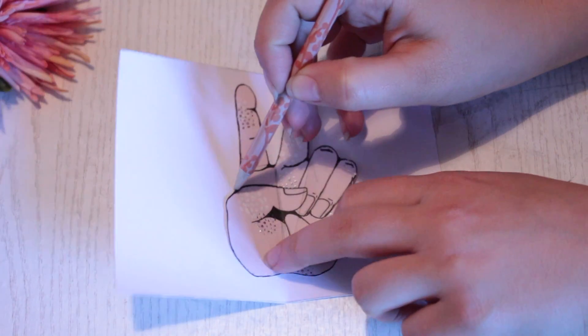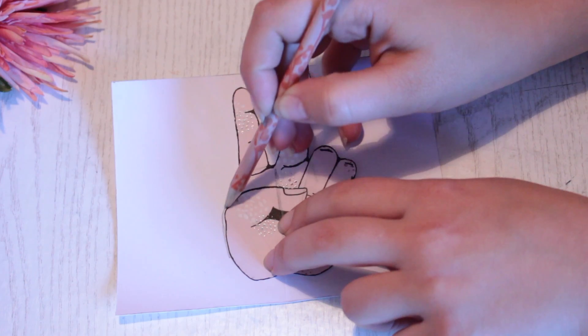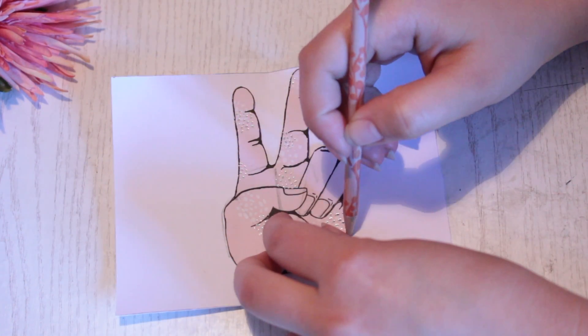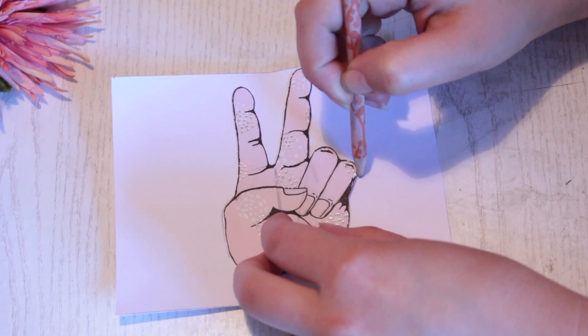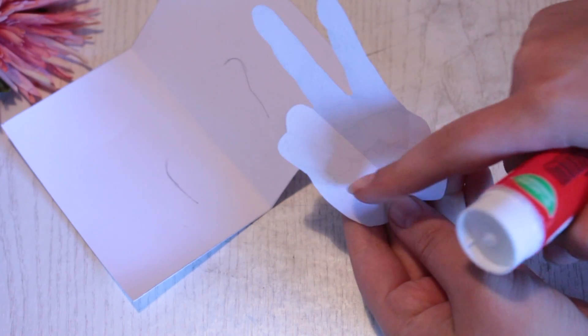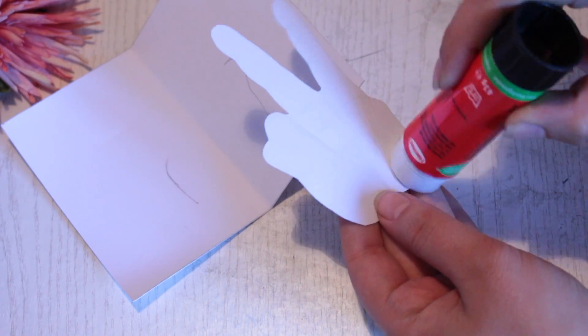Place the hand into the card and only sketch around it in a few places, just so you know where to place it when it's going back into the card. Now only put glue on the areas that have nothing to do with the folding.